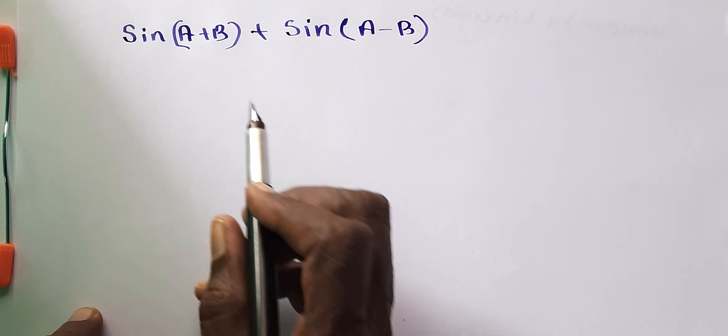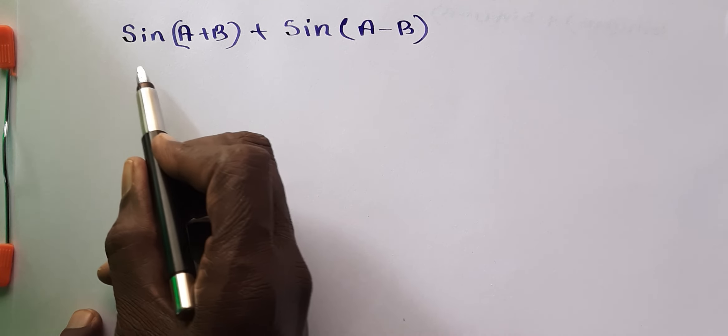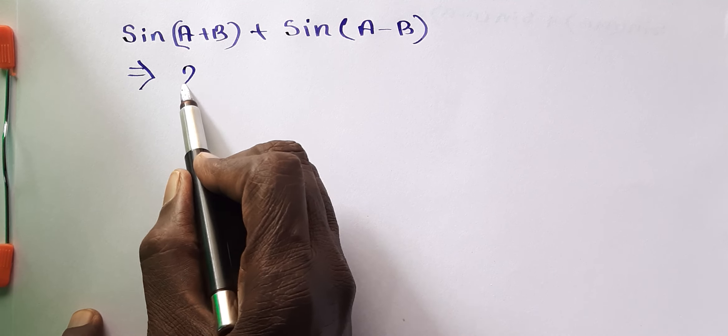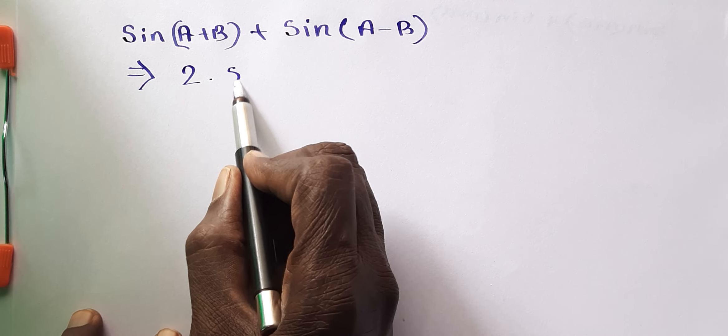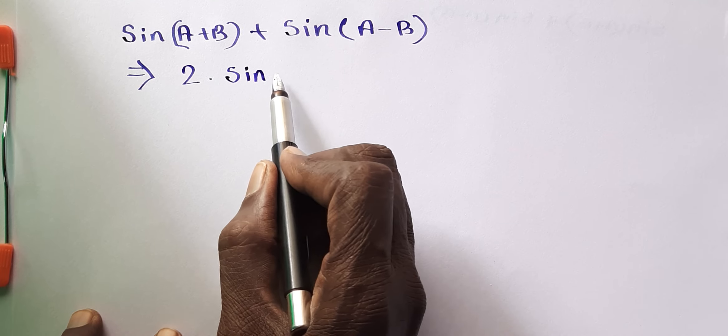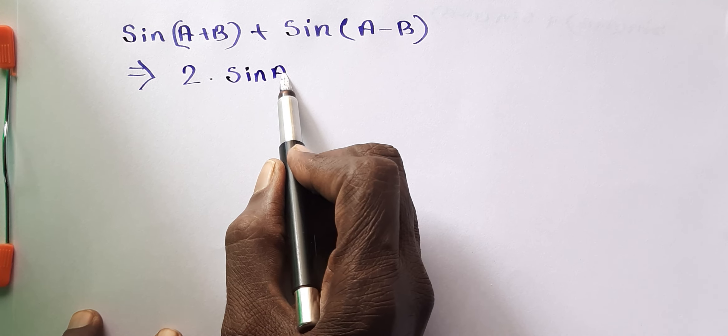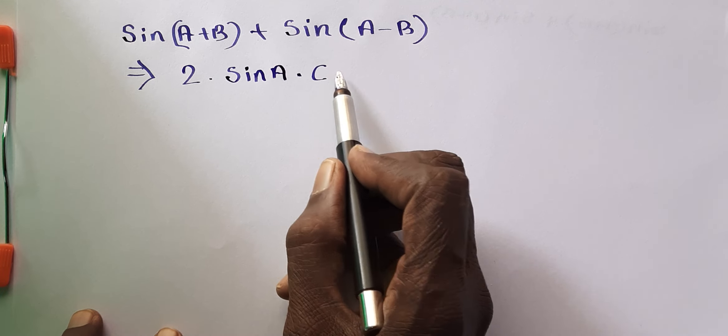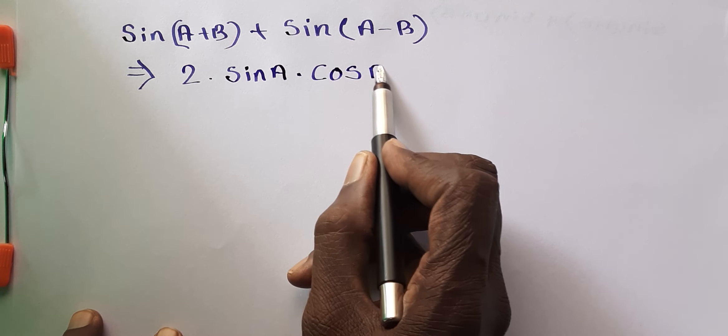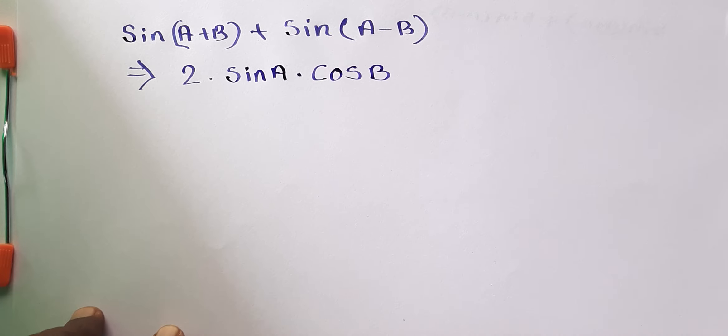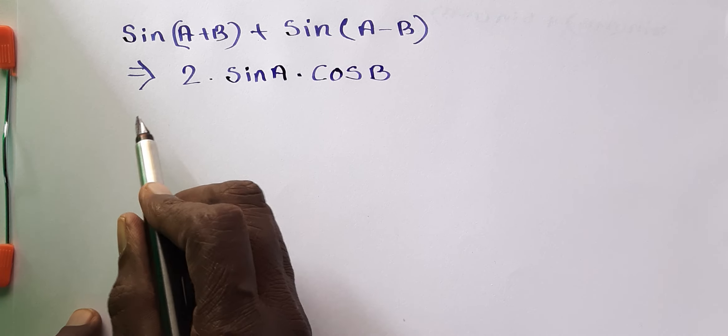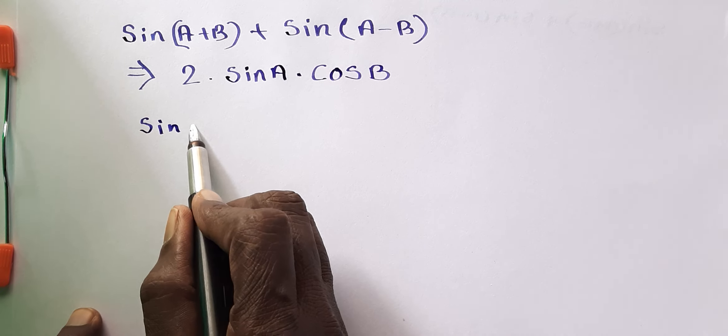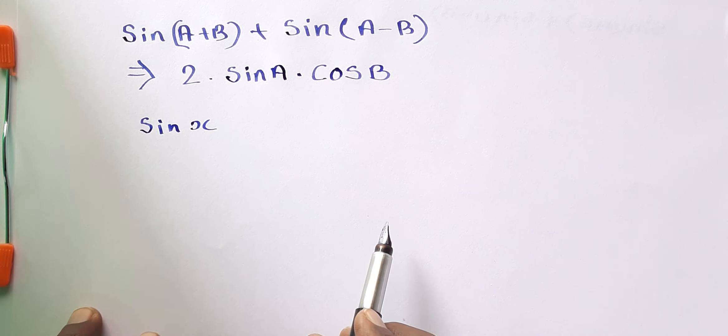We now get that 2 Sine A into Cos B. That's all. The same one if Sine X, let it be X